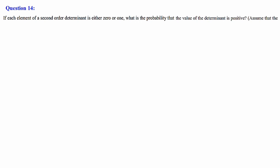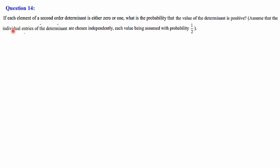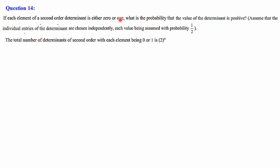Question number 14: if each element of a second order determinant is either 0 or 1, what is the probability that the value of the determinant is positive? Each entry is chosen independently with probability 1/2. We have two numbers (0 and 1) and a 2×2 determinant, so the total possible ways = 2^4 = 16.